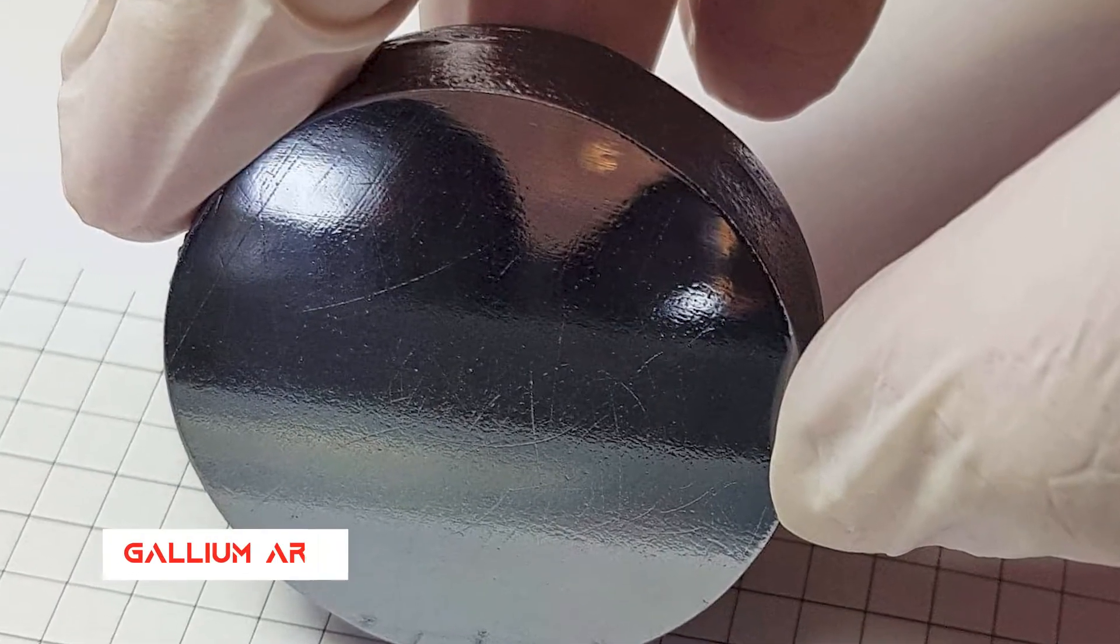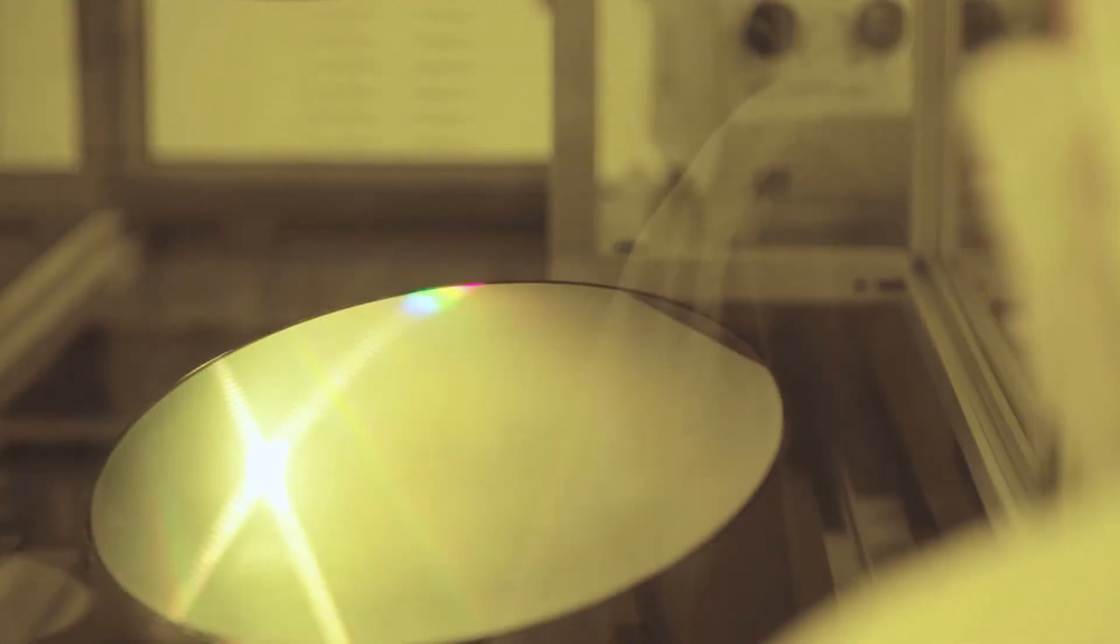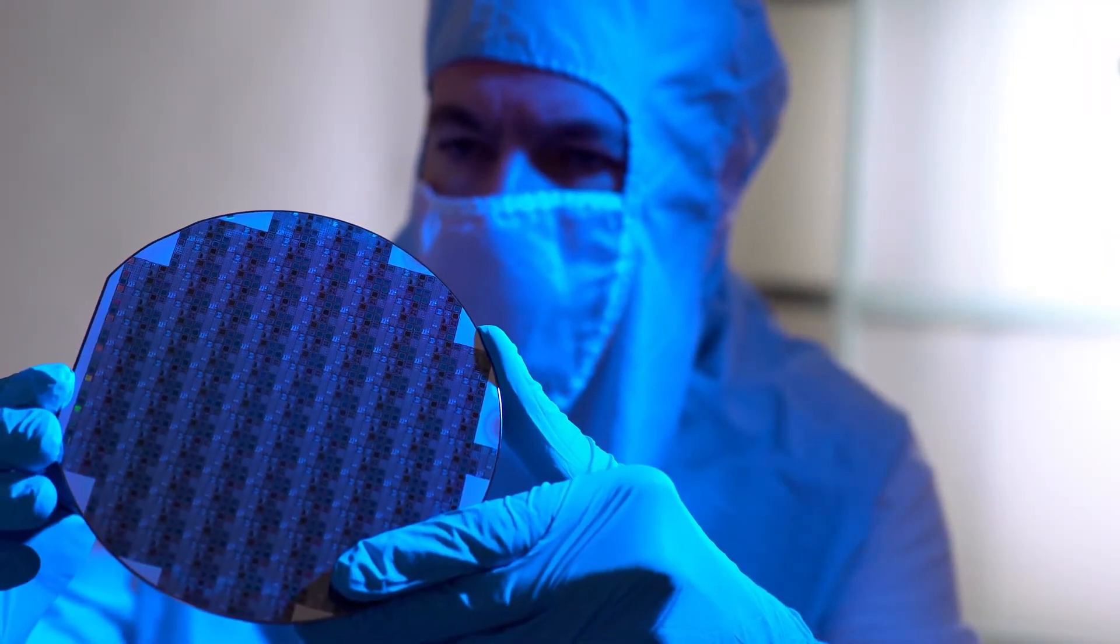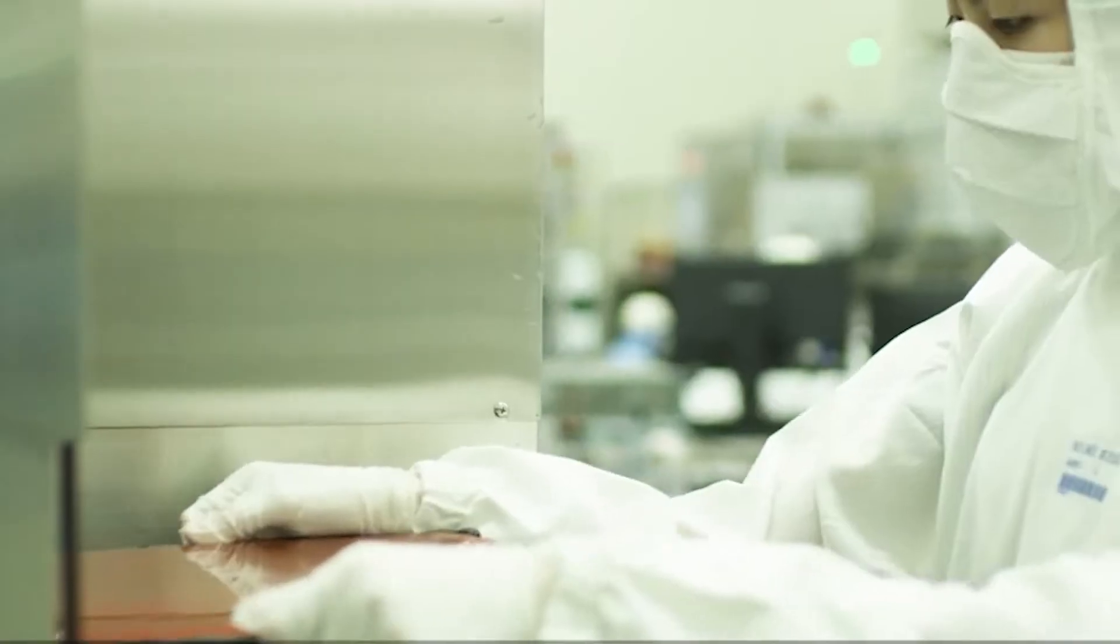Gallium Arsenide is a commonly used material for high-speed devices. However, it has been difficult to form large diameter boules of this material, making it less desirable. This limits the wafer diameter to sizes drastically smaller than silicon wafers, meaning mass production of gallium arsenide devices are much more costly than silicon-powered devices.